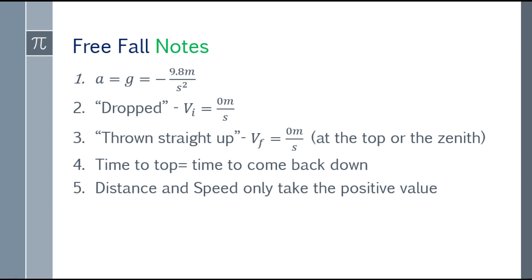When thrown straight up, the initial velocity will be given or asked. But the final velocity at the very top is 0 meters per second. Fourth, time going up equals time going down. Fifth and last, distance and speed only take positive values — same with height. Height cannot be negative. If displacement comes out negative when finding height, take the absolute value, though it depends on the problem.